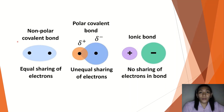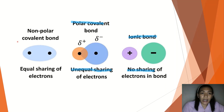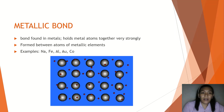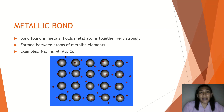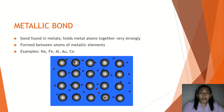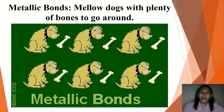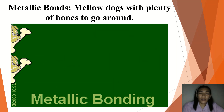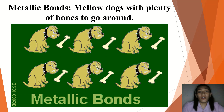Here is a summary of the bond types. For ionic bonds, there is no sharing — there is a transfer of electrons. For polar covalent bonds, there is unequal sharing. For non-polar covalent bonds, there is equal sharing of electrons. Our last type is metallic bonds — bonds found in metals that hold metal atoms together very strongly. They are formed between atoms of metallic elements, such as sodium, iron, and aluminum.